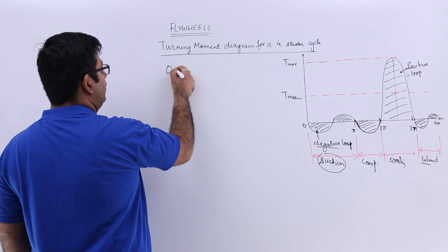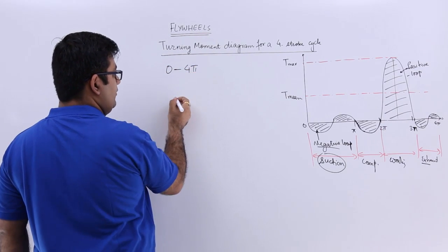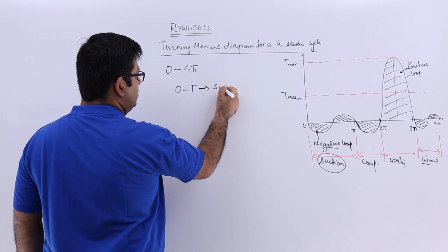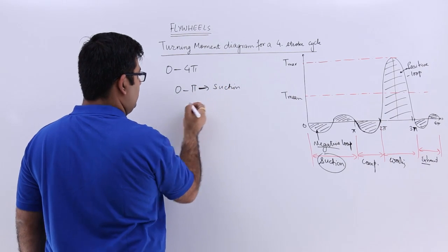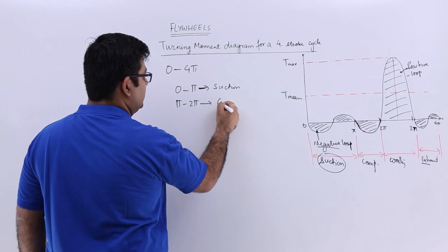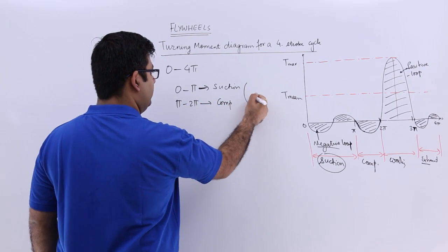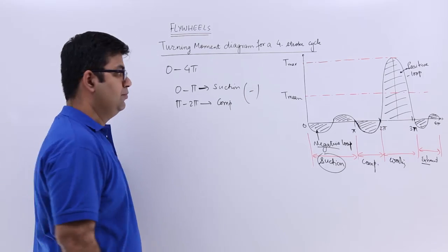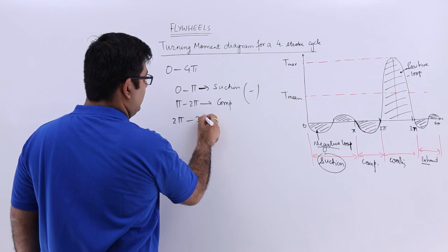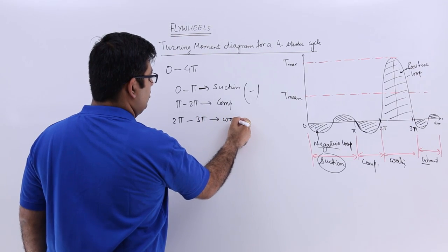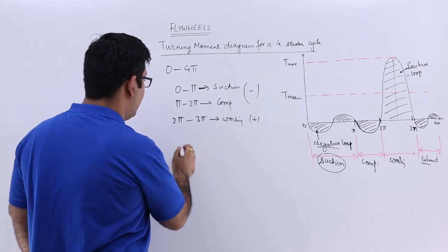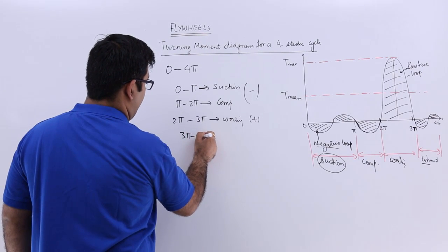The complete cycle is from zero to 4π. From zero to π, you have your suction stroke. From π to 2π, you have the compression stroke—both will have negative loops. Then from 2π to 3π, we have the working stroke. Only the working stroke is positive. Last is 3π to 4π, which is exhaust, also negative.